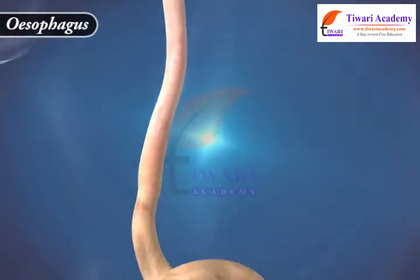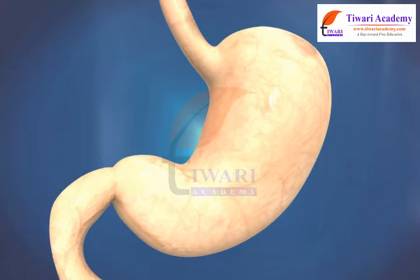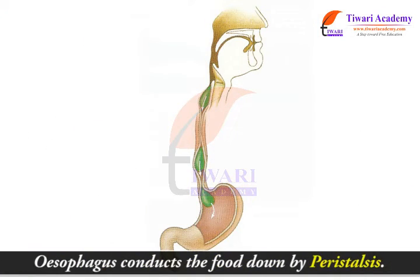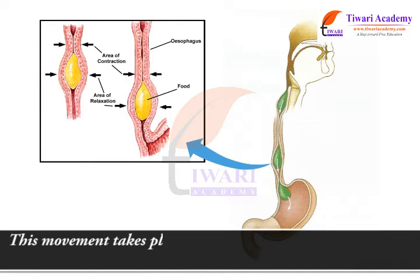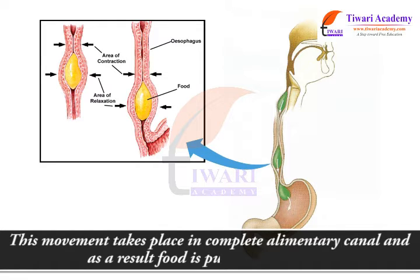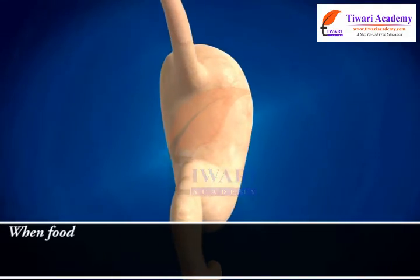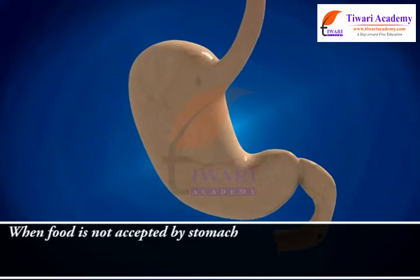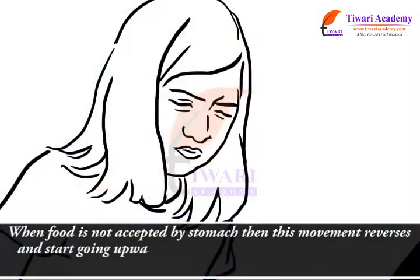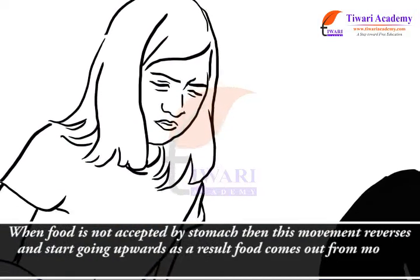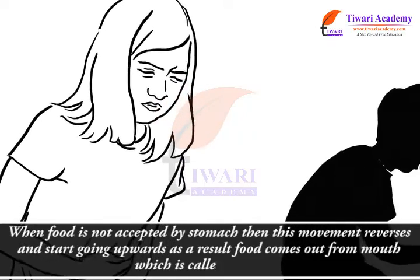The esophagus conducts food downward by peristalsis. This movement takes place in the complete alimentary canal, and as a result, food is pushed downwards. When food is not accepted by the stomach, this movement reverses and starts going upwards, causing food to come out from the mouth, which is called vomiting.